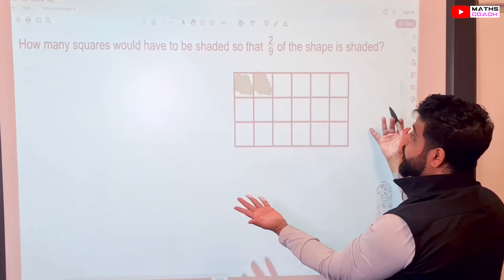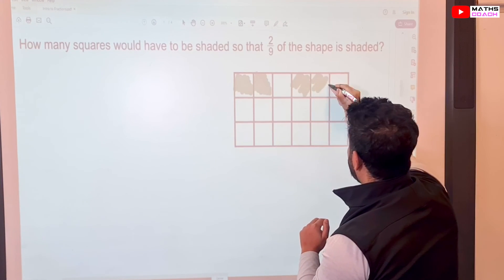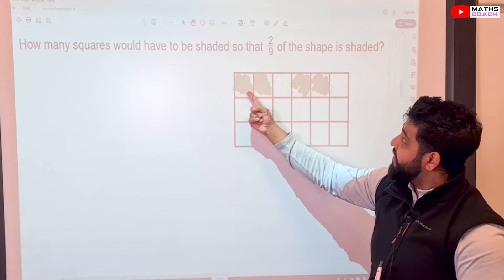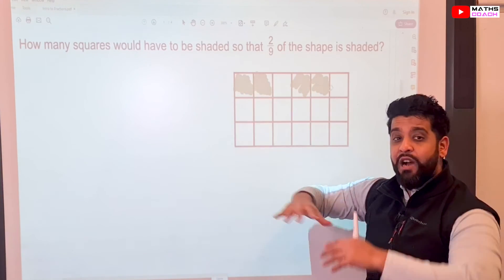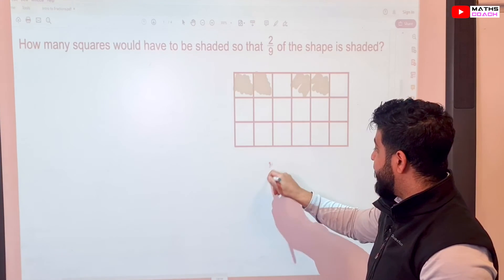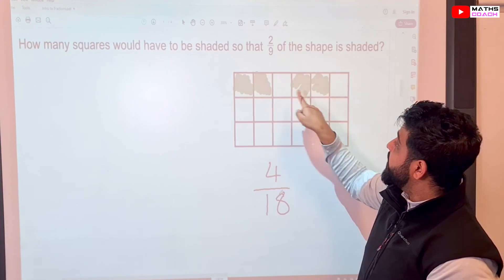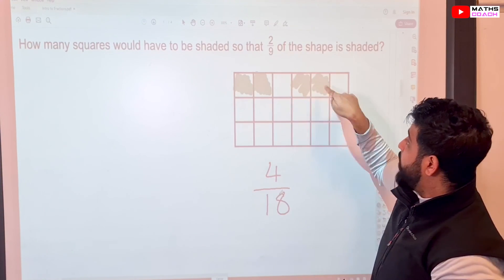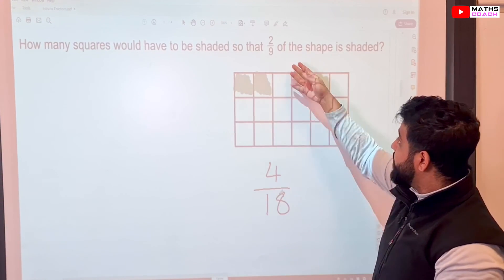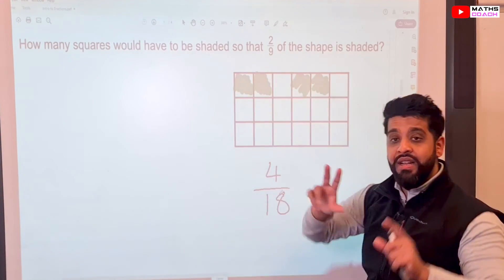So once again, any two, it doesn't matter. So I'll just choose this one and this one again. Now, you can see that I've got four shaded out of the total, which was 18. So as a fraction, I will say four out of 18. Once again, I have shaded in two out of every nine of this shape and the equivalent fraction of that is four out of 18. And we will look at that next.